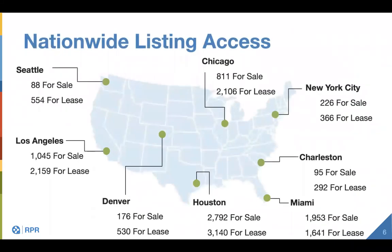Within RPR you also have nationwide listing access to supplement your local CIEs and MLSs, giving you a broader search scope. Depending on what part of Louisiana you work in, you might not always have exact one-to-one comparables — especially for on-market properties. RPR gives you the ability to search similar markets around the Southeast or Gulf Panhandle and pull those into your comparative analysis or broker's opinion.